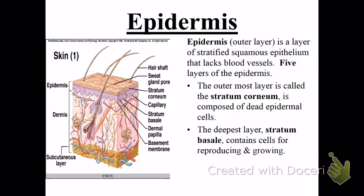The epidermis, the outer layer, lacks blood vessels — highlight that. It gets nutrients by diffusion up from the dermis. There are five layers to the epidermis, but you only need to know two. The stratum corneum is the dead epithelial cells that slough off — the dust in your house is largely made up of dead skin cells, and your skin renews every two weeks.